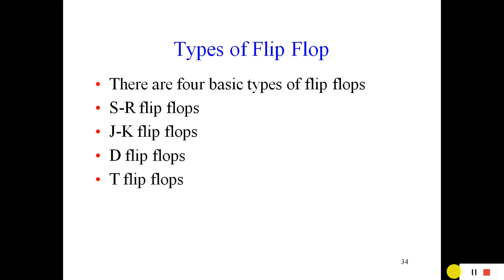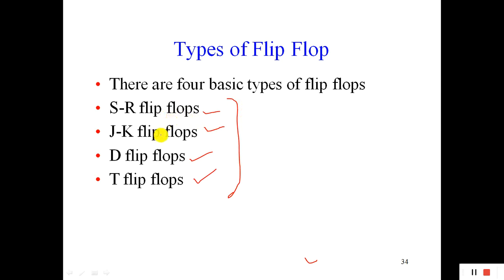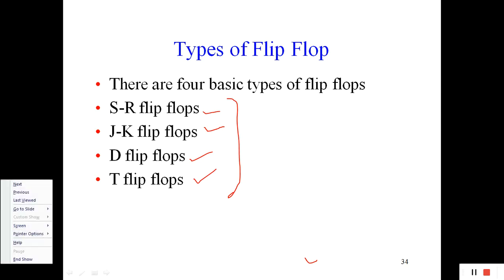Now let's look at the types of flip-flop. A flip-flop is a memory storage device, and in general we have four types: SR flip-flop, JK flip-flop, D flip-flop, and T flip-flop. The entire unit is related to all these flip-flops. In the next lecture we will design the SR flip-flop and see how it works, then JK, D, and T flip-flops. If you understand the SR flip-flop, you can understand the others.